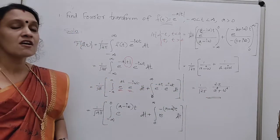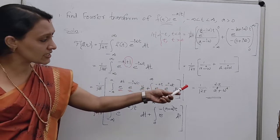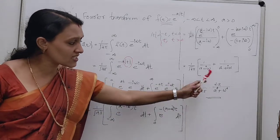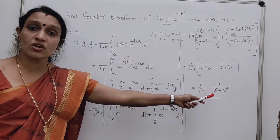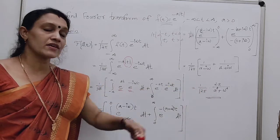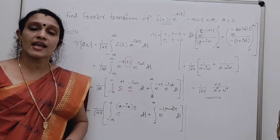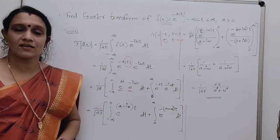So the final answer — the Fourier transform of f(t) = e^(-a|t|) — is F(ω) = (1/√(2π)) × 2a/(a²+ω²). This is a function of ω, so we denote it as F(ω).